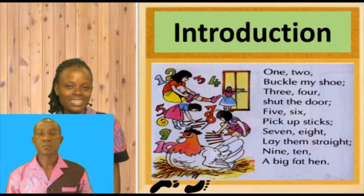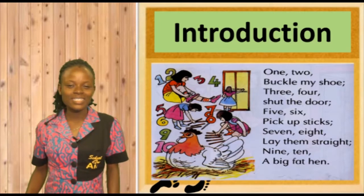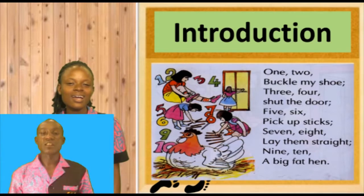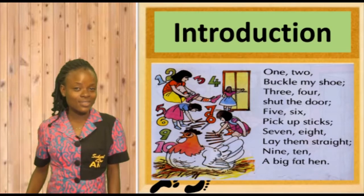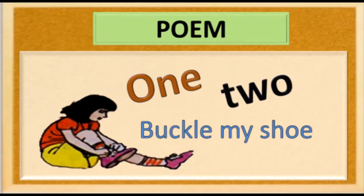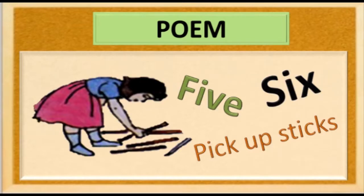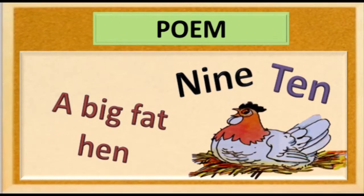Now, would you want to go along with me? All right, let's do this together. Are you ready? Okay, at the count of 3, I want us to do this together. 1, 2, 3 — Go! 1, 2 — Buckle my shoe. 3, 4 — Shut the door. 5, 6 — Pick up sticks. 7, 8 — Lay them straight. 9, 10 — A big fat hand.